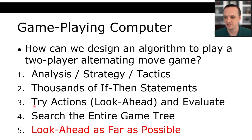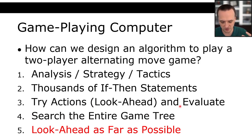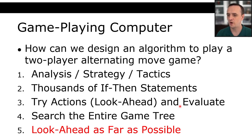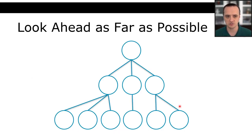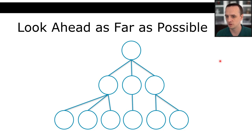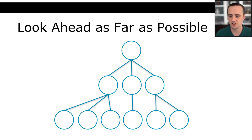Looking ahead one depth didn't work because we want to analyze more, but we can't search the entire game tree. The natural place to fall is somewhere in the middle: look ahead as far as we can, meaning whatever our resources allow — maybe depth two, or 100,000 nodes, or search for an hour. That constraint defines how far we look ahead, and hopefully gives us enough information to make a decent decision.